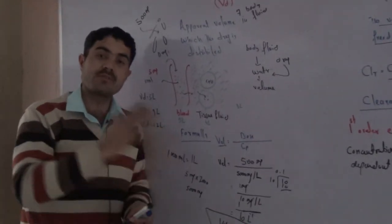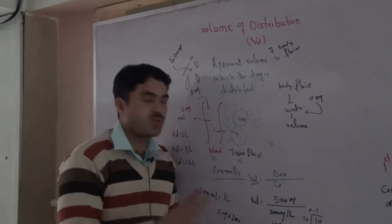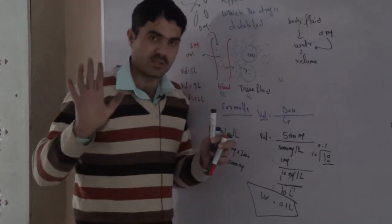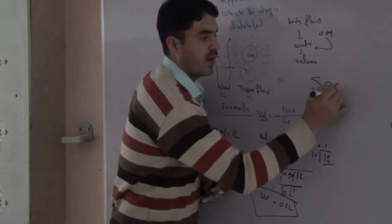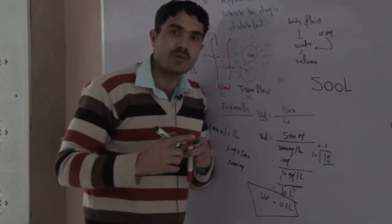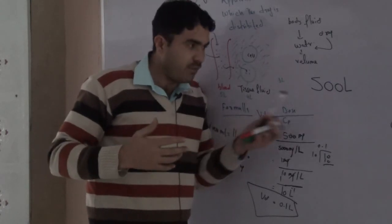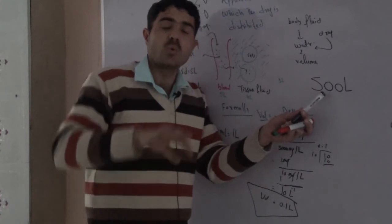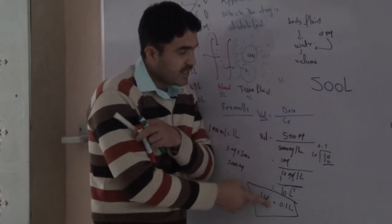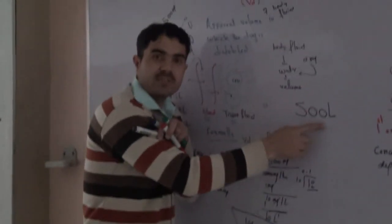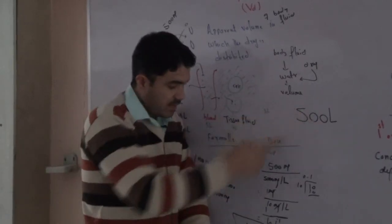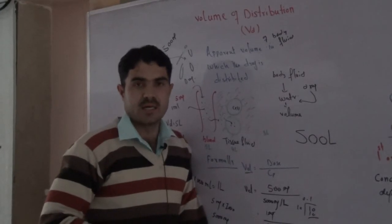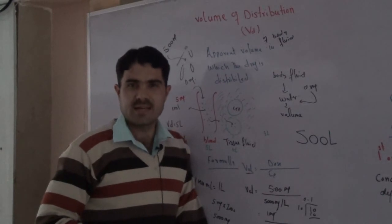A volume of distribution of 1 liter or 5 liters seems reasonable, but what if a drug has a VoD of 500 liters? This is surprising — our body doesn't have 500 liters of liquid. However, this value comes from the formula, which is why we use the word 'apparent' volume. Apparent means that volume does not necessarily exist physically in the body; it is a calculated value. Whether the answer is 500 liters or 5 liters, the formula gives the correct result. Thank you for watching — I hope you liked the video.